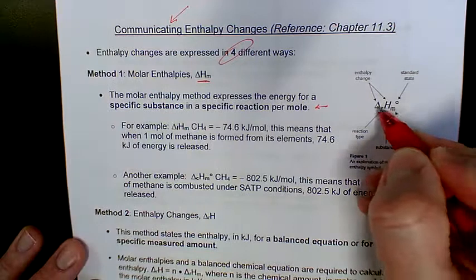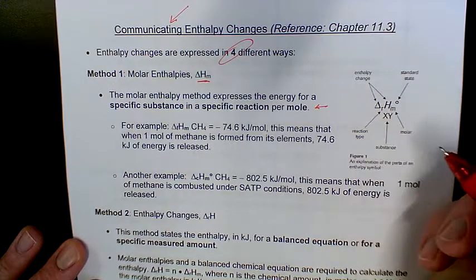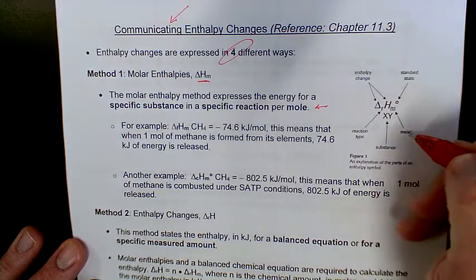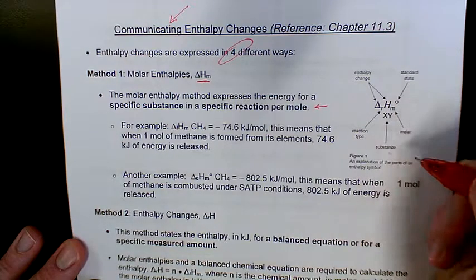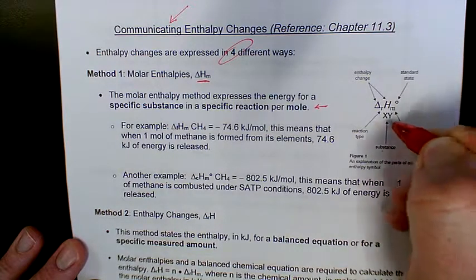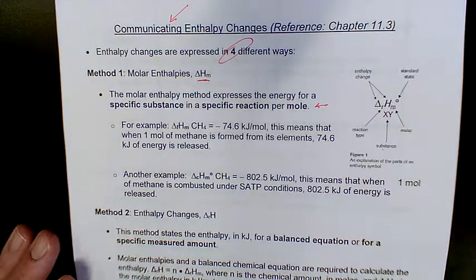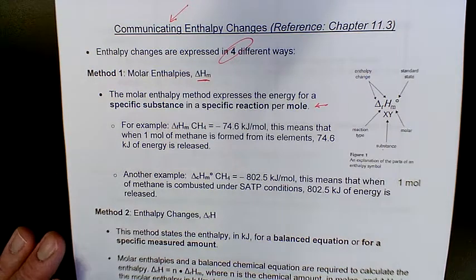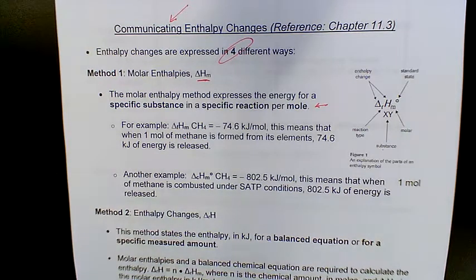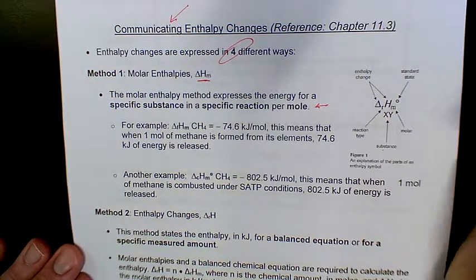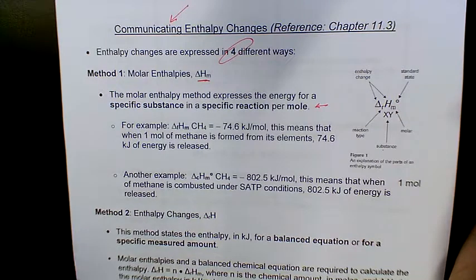You can kind of see that over here. We have delta H, which is your enthalpy change. We can see the subscript M, which is telling us that it's a molar quantity. And then since it's a molar quantity, we need to know what substance it is, so that gets written underneath. We do like to talk about the types of reactions. So combustion is different than formation, which is different than decomposition, which is different than single replacement, and so on and so forth. And then this just means standard conditions and standard states, such as STP or SATP.